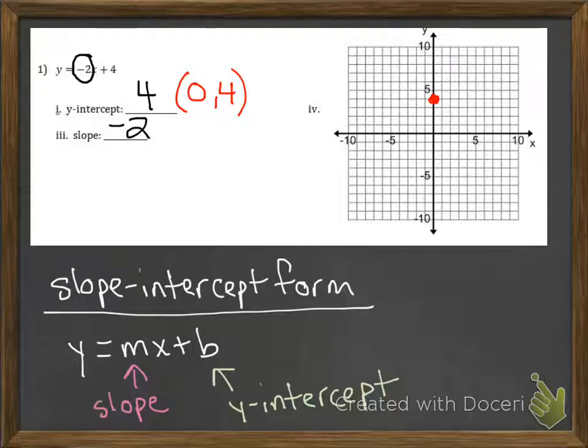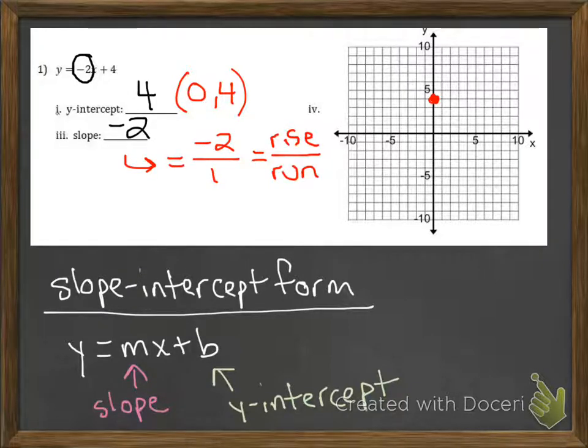We can use that information to sketch our graph. The y-intercept is going to be a point that's on the y-axis at positive 4, and the slope tells us our rise over run. We can turn that into a fraction by just putting it over 1, and so that tells me that I'm actually going to go down 2 and over 1, and when I do that I can graph more points and then connect the dots in order to create my graph.